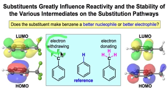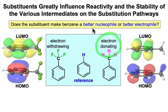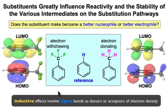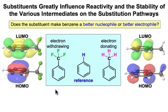Substituents can withdraw electron density from the π system to make it a better electrophile, or donate electron density to make it a better nucleophile. Substituents that act by inductive effects — such as a trifluoromethyl group or a methyl group on the benzene ring — involve σ and σ* interactions with the π system. We can look at the frontier molecular orbitals to decide how these substituents influence the electrons in the π system.